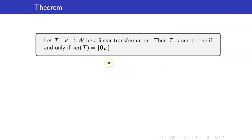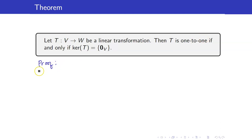Here is a characterization for a linear transformation to be 1-to-1. T is 1-to-1 if and only if the kernel of T consists of a single element only, and that is the zero vector in V. This is an if and only if statement, so therefore we will prove two directions.